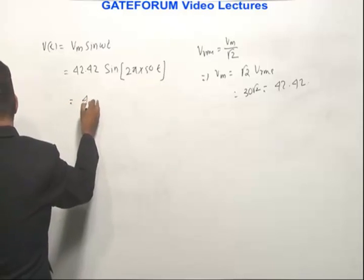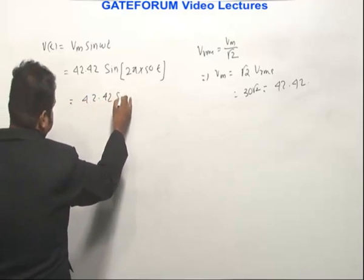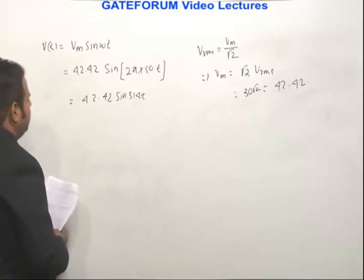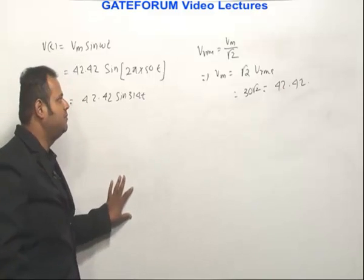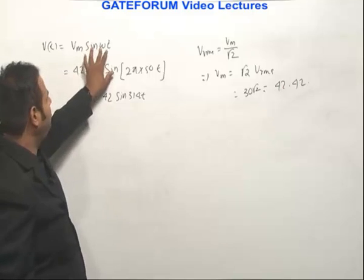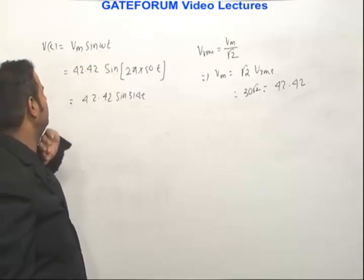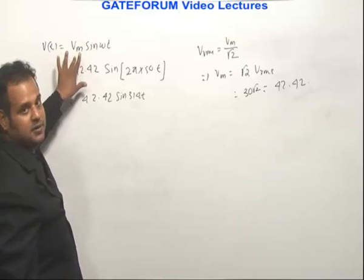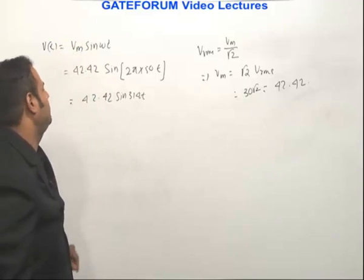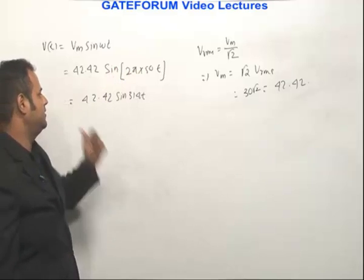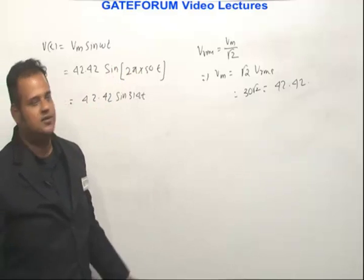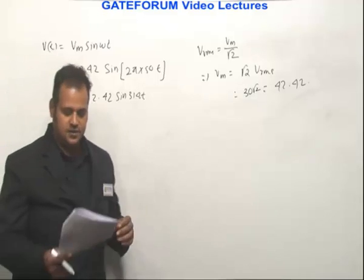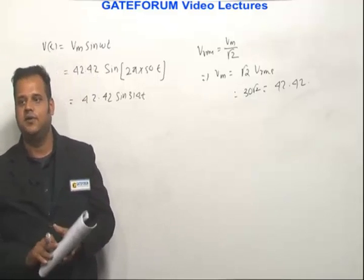Evaluating this, ω = 2π × 50 = 314 rad/s, so it is 42.42 sin(314t). One common mistake is to put 50 directly for ω and 30 directly for amplitude. The key point is that the amplitude given is RMS, so you multiply by √2. The answer is 42.42 sin(314t), given in option C — C is the right answer.